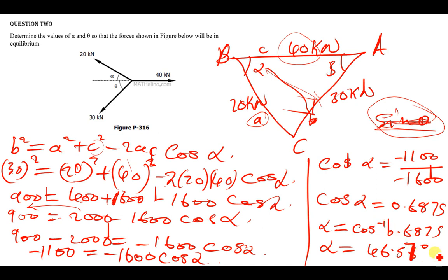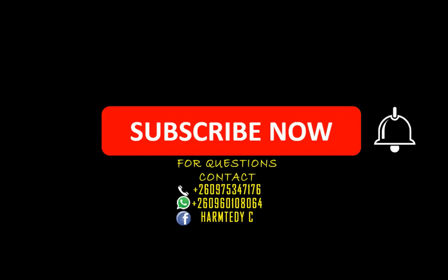So that is the value for alpha. I've managed to find both alpha and theta — that was just an error where I put a minus instead of a plus, but I noticed it and corrected it. Thank you very much for watching today's tutorial. Feel free to inbox me if you have any questions, and don't forget to subscribe. My name is Hamted.